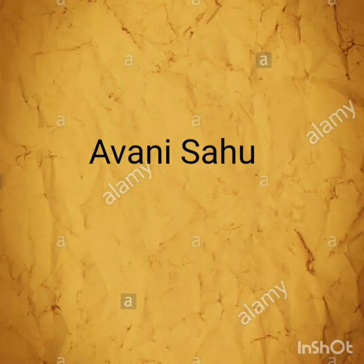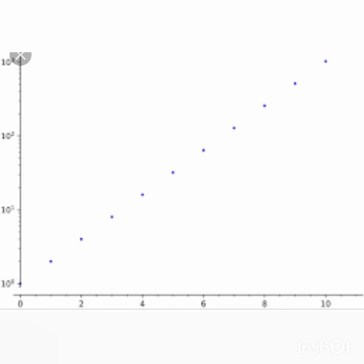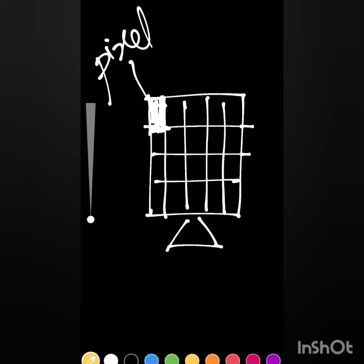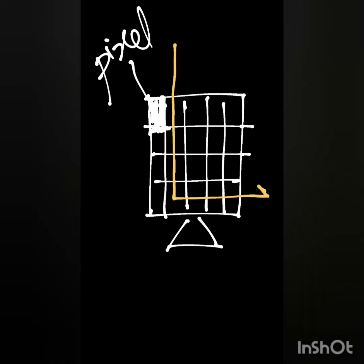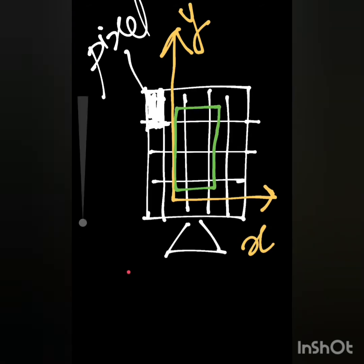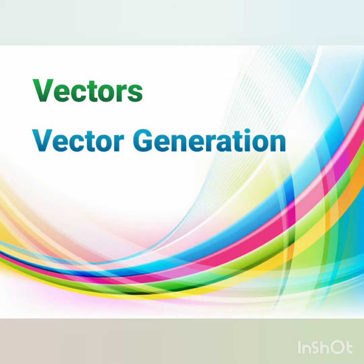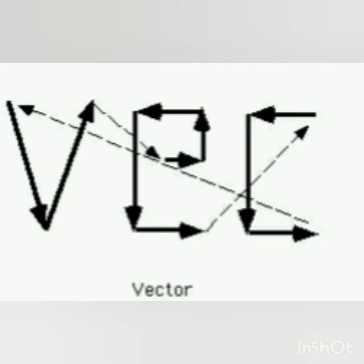Hello everyone, my name is Avni Sahu. Welcome to the next video. As in the previous video we understood what plotting primitives mean — these are the basic components, that is pixels, which are used to generate a picture on a 2D coordinate system. We also got to know about its types, that is scan conversion, line, and line segment. In this video you will get to know more of its types, that is about vectors and vector generation.